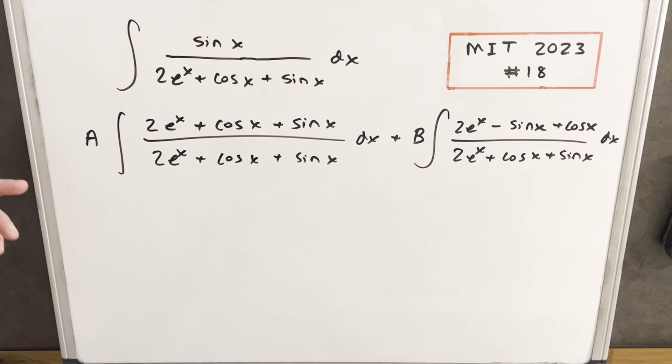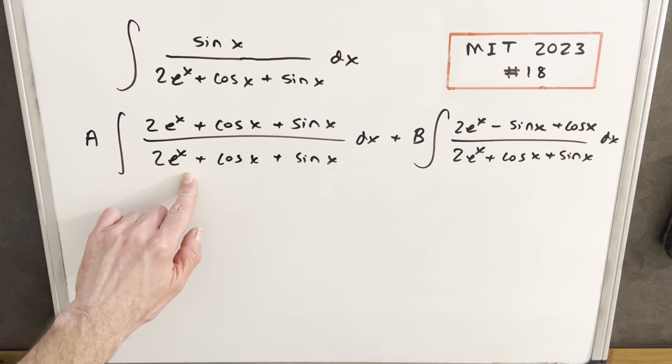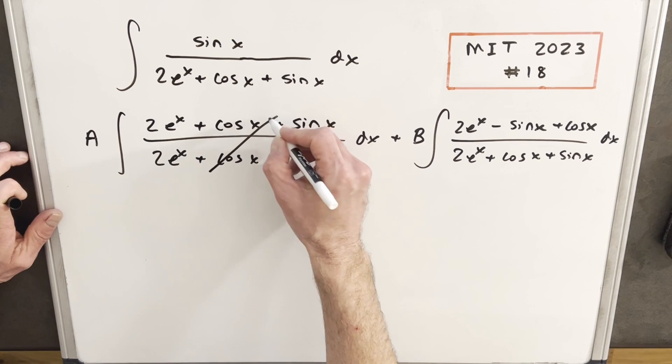Okay, so now what I have is my method of wishful thinking, where I've set this up exactly how I want it. Where I want the first integral to have the numerator and denominator be the same so that this is all one.